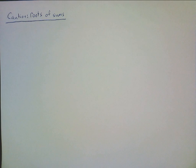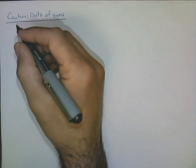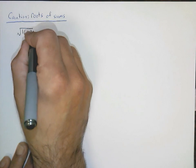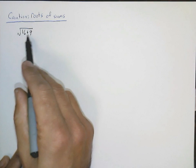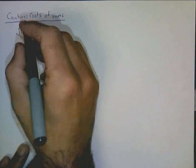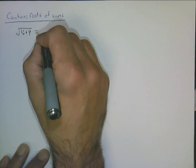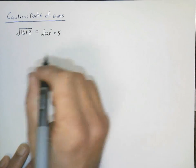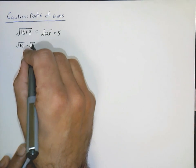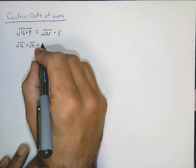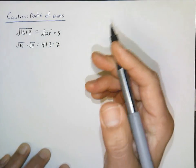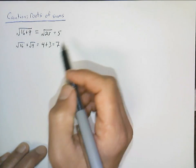One important caution: be careful about roots of sums. If we have the square root of 16 plus 9, it's tempting to split the radical over the addition. But 16 plus 9 is 25, and the square root of 25 is 5. If we incorrectly split it as the square root of 16 plus the square root of 9, we get 4 plus 3, which is 7 — not the same. So just like with exponents, don't try to distribute a radical over a sum. It doesn't work.